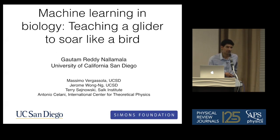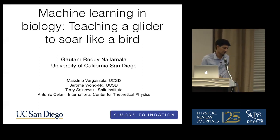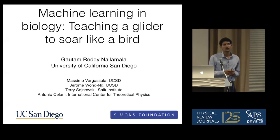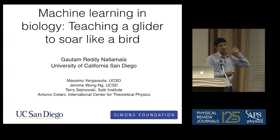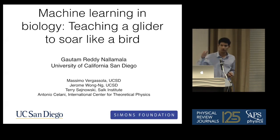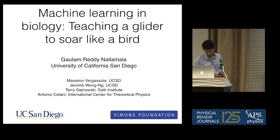We are interested in animal behavior and understanding animal behavior. One grand challenge in behavior is to quantitatively describe behavior. For instance, what you would like to do is look at an animal's past and predict what it could do in the future, given a particular task. The task we're interested in is soaring — birds soar, they use atmospheric currents to gain height, and they do this to save energy.